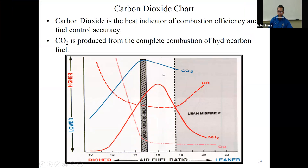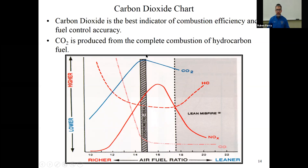Looking at the carbon dioxide chart, notice that carbon dioxide is high at the stoichiometric value. We call carbon dioxide the best indicator of combustion efficiency. When carbon dioxide is high, that means all our other gases are at a pretty decent level. Carbon dioxide is produced from the complete combustion of hydrocarbon fuel, so it is an indicator of overall engine efficiency.